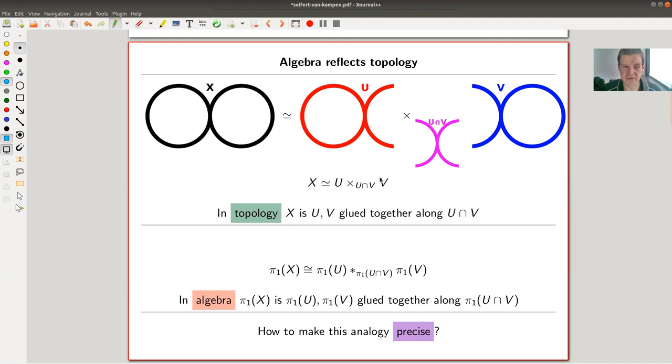Let's do an easy example. I have my figure eight here, my space X. It's certainly made out of a left figure eight, this circle with the red one here, and on the other hand, this guy. They are glued together along this middle bit, the U intersect V. Topologically, this is just clear.